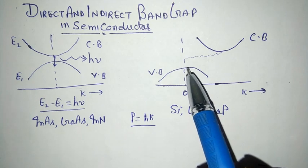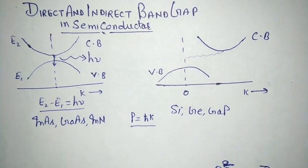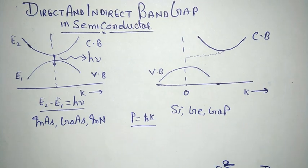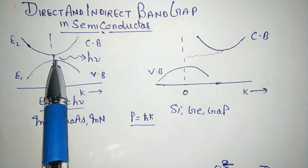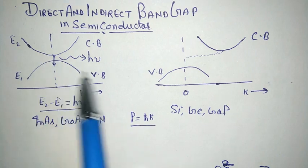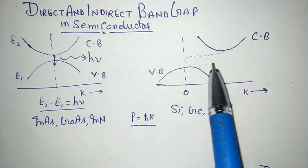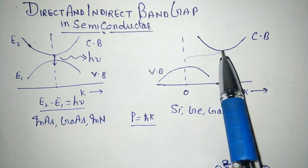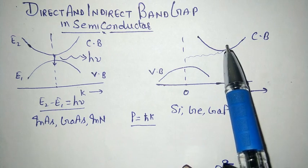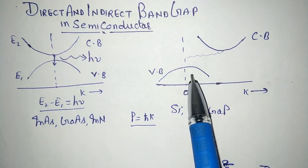This is known as an indirect band gap semiconductor. To contrast: in a direct band gap semiconductor there is no change in momentum, but in an indirect band gap semiconductor there is a change in momentum during the transition from the higher state to the lower state.